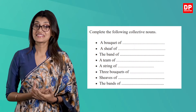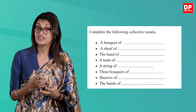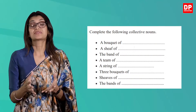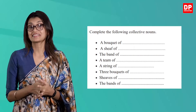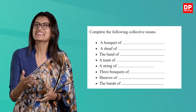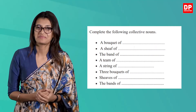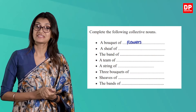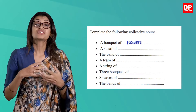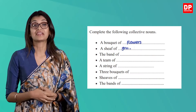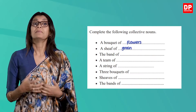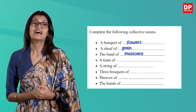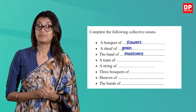In Activity 7 on page 77, you are asked to complete the collective nouns. Let's do it together. A bouquet of flowers. A sheaf of grain. A band of musicians. A team of players. A string of beads.